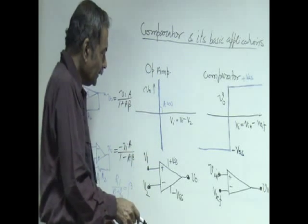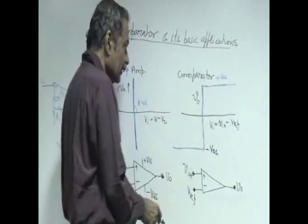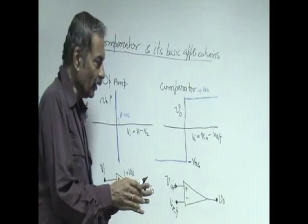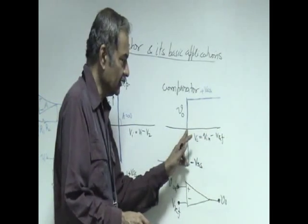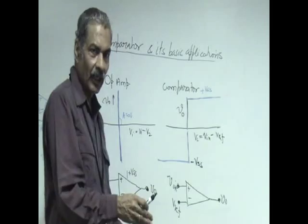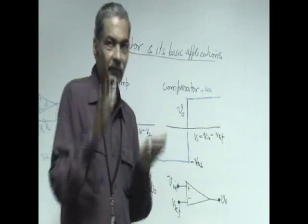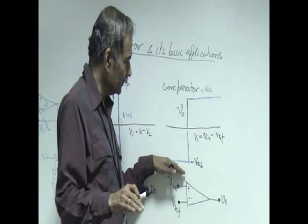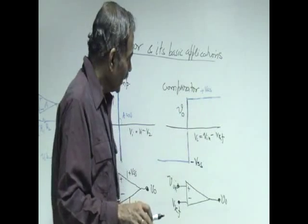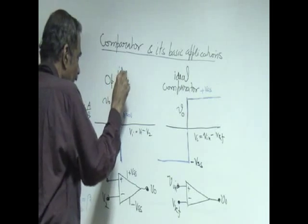Whereas in a comparator the same thing is valid that the gain has to be infinity or very high in order to indicate clearly just one transition point where V in becomes equal to V reference that is 0, Vi is equal to 0. However, it has to indicate at the output that it has crossed this V reference by going from low to high. The low and high levels are specified, this low one is the 0 in this case negative saturation and high one is the positive saturation which is 1. Therefore, this is the ideal comparator characteristic and this is the ideal op amp characteristic.